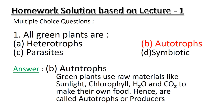Question number 1: All green plants are — A) heterotrophs, B) autotrophs, C) parasites, D) symbiotic. We all know that green plants use raw materials like sunlight, chlorophyll, water, and carbon dioxide to make their own food. Hence they are called autotrophs or producers. Option B, autotrophs, is the correct answer.